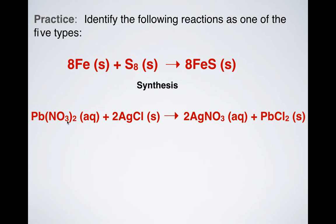Then I've got lead(II) nitrate and silver chloride. I'm making silver nitrate and lead(II) chloride. This already looks more complicated than the other ones, except maybe the combustion one. But that would be an example of double displacement. Notice you have your lead(II) ion pairing up with your chloride ion, and then your silver and your nitrate group pairing up, making these products on the opposite end.